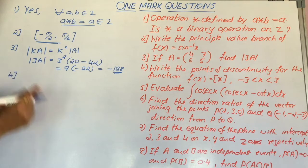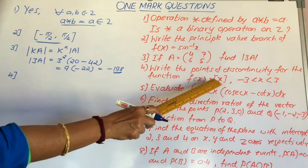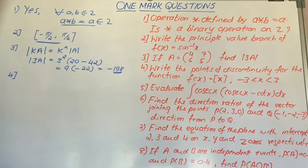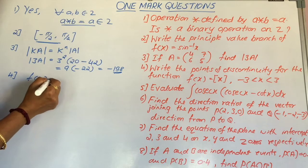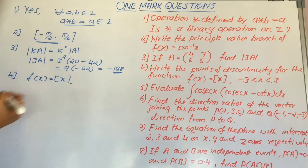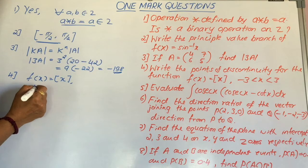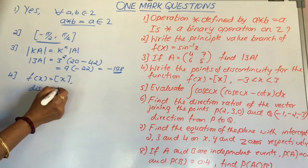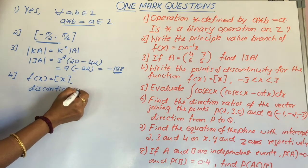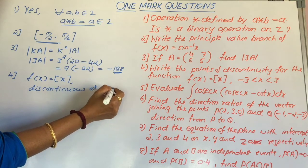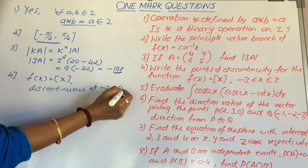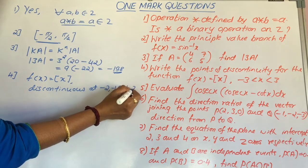We know that the greatest integer function f of x is equal to greatest integer x is discontinuous at all integral points. Therefore, the given function f of x is equal to greatest integer x is discontinuous at minus 2, minus 1, 0, 1 and 2.